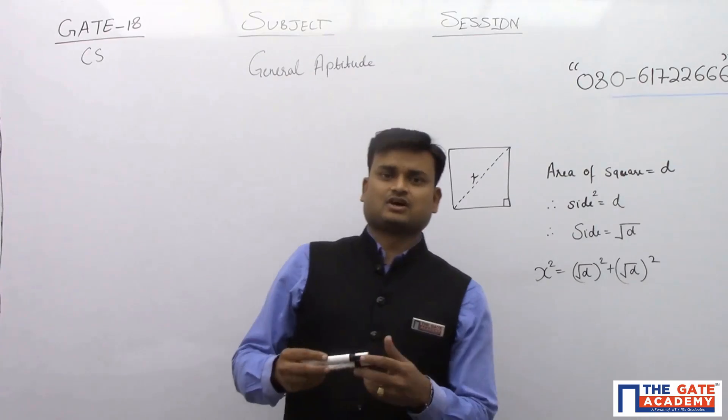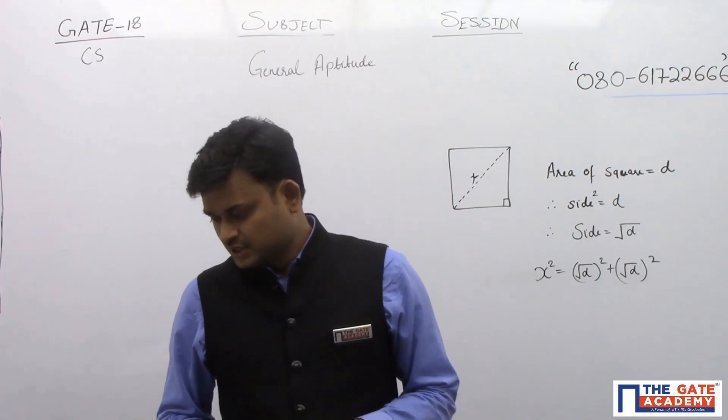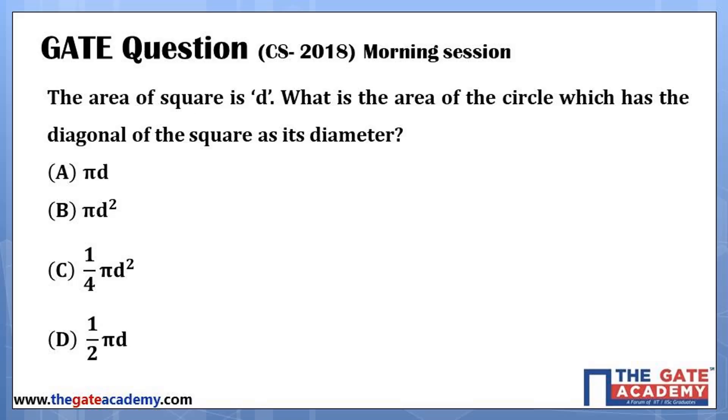So with this let's start solving the question. There is a question where it is given the area of square is D. What is the area of the circle which has the diagonal of the square as its diameter?